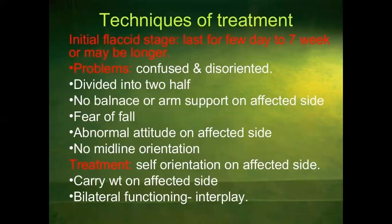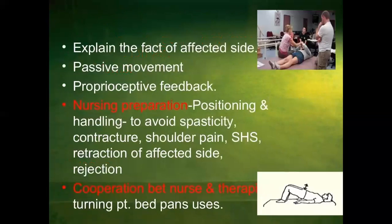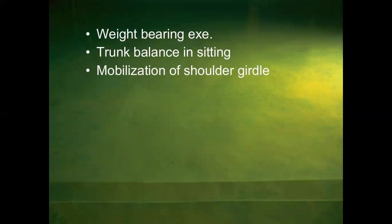Positioning: the techniques of treatment in the initial classic stage last a few days to 7 weeks or longer. Problems include: confused and disoriented, divided into two halves, no balance or arm support on the affected side, fear of falling, abnormal attitude on the affected side, and no midline orientation. Treatment involves self-orientation on the affected side, carrying weight on the affected side, and bilateral functioning. It also includes passive movement, proprioceptive treatment, nursing preparations such as positioning and handling to avoid spasticity, contracture, shoulder pain, retraction of the affected side, and cooperation between bed nurse and therapy, training patient in bed use, weight-bearing exercises, trunk balance and sitting, and mobilization of the shoulder girdle.